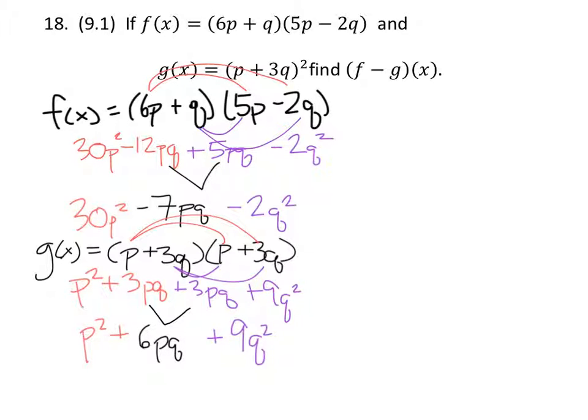If we write these above and below each other, just these two expressions f of x and g of x as they have been multiplied, we can see that if we write these in columns where the p squareds are in their own column and pq is in its own column and q squared as well.